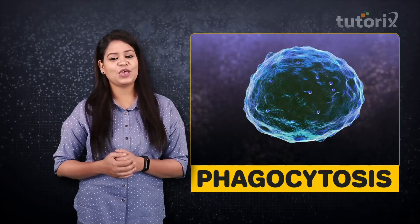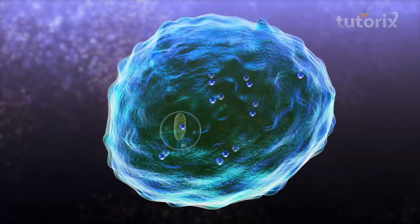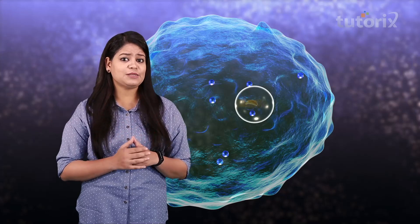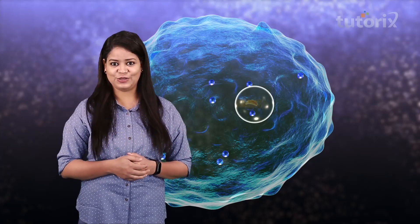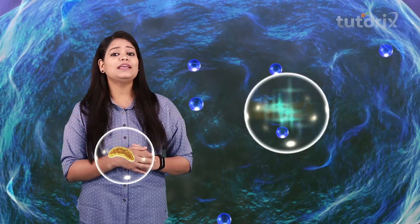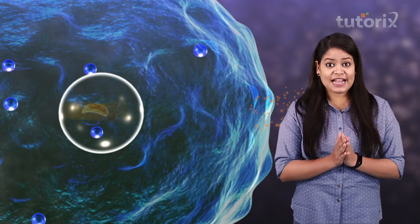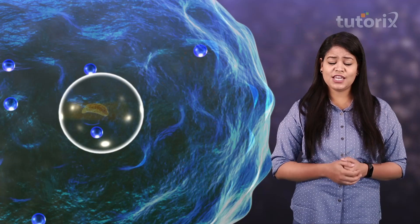In phagocytosis, the pseudopodia entrap the food particle and a vacuole is formed around it known as a phagosome — a modified version of the food vacuole. This phagosome fuses with the lysosome present inside the amoeba, forming a phagolysosome. The lytic enzymes inside the lysosome carry out digestion of the food particle. The nutrients formed diffuse into the cytoplasm, and waste material is expelled out of the cell.